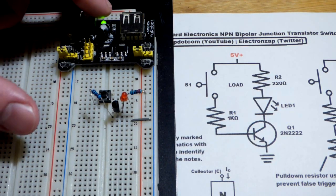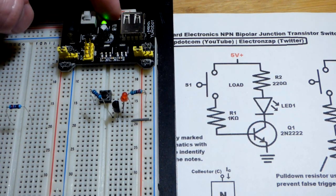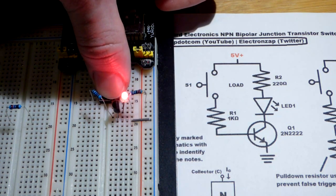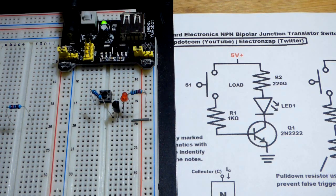And now we test the circuit. So, you can see the green LED is on. So, that we know the power supply is working. And we hit the switch. That LED comes on when I close the switch.